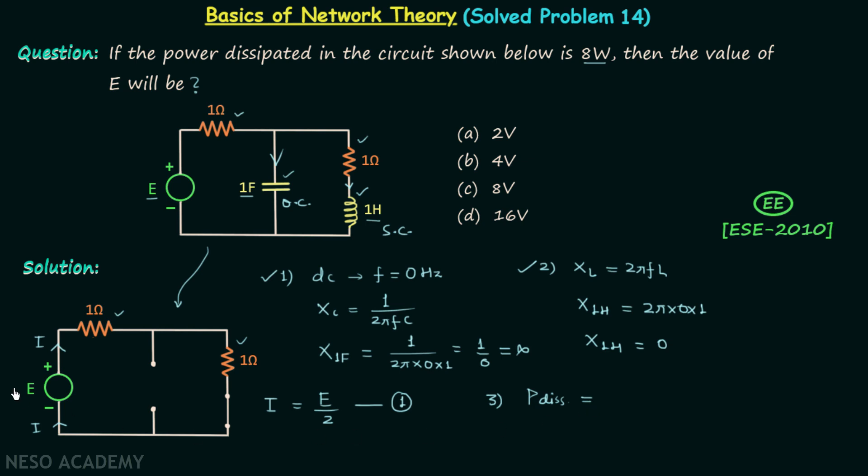Therefore the power dissipated will be equal to the voltage across the resistors multiplied by the current through the resistors. We have found I equals E by 2. Therefore we can say that the power dissipated, which is 8 watts, is equal to E multiplied by E divided by 2. From here we are getting E² equals 16.